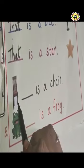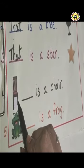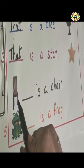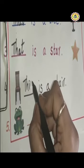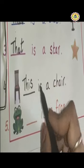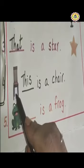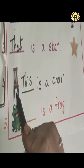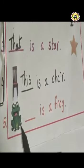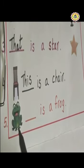Next one. Look at this chair — it is near. So here, what we have to write? Very good. This is a chair. Next one.